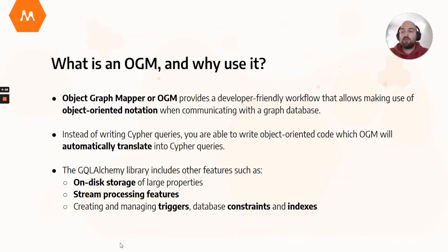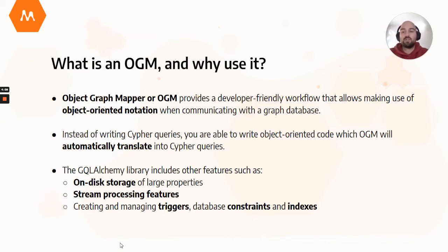An Object Graph Mapper provides a developer-friendly interface to work with graph databases. Instead of writing queries using the Cypher query language, you can write object-oriented code, which the OGM will automatically translate into Cypher queries.